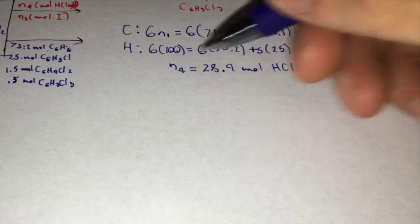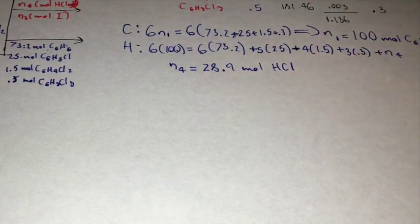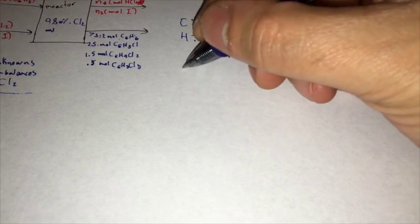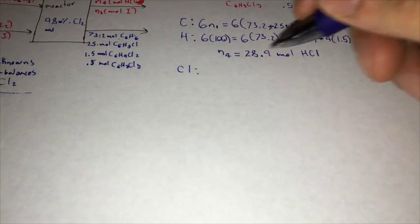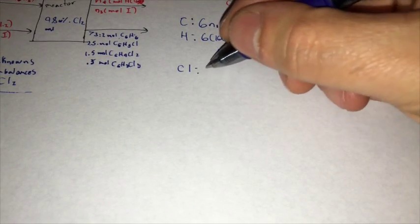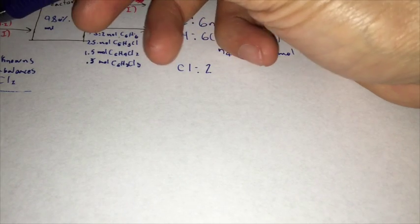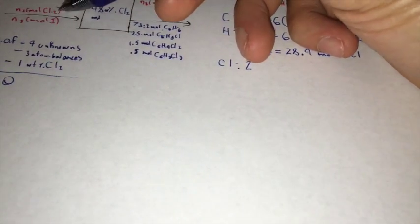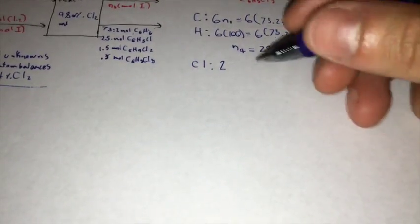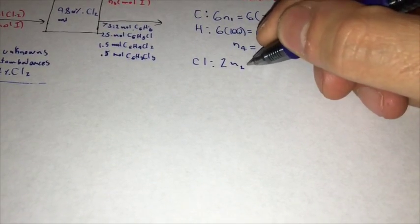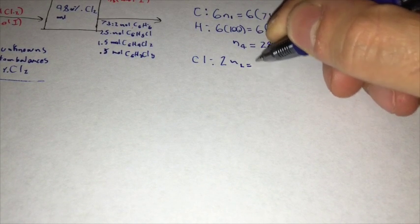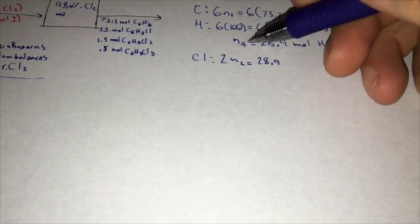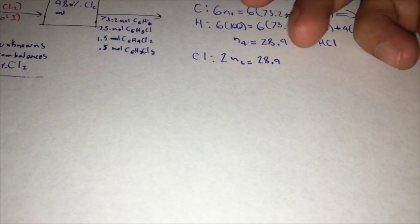And now we are going to do our chlorine balance, which is going to be equal to 2N2 going in. We have two chlorines over here, so 2N2 is equal to 28.9, our N4, which has one chlorine.